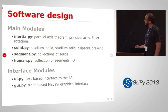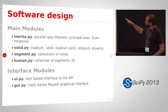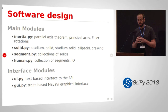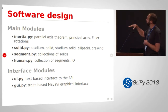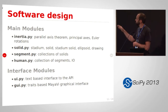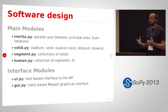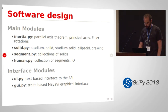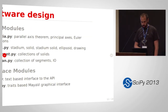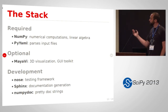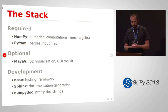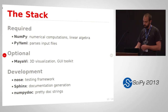We have a Python package that implements this model. We have an inertia module that deals with basic inertia things like the parallel axis theorem. Then we have a solid module that deals with the basic stadium shape and all the associated inertial properties for a single stadium. Then we have segments that are made up of multiple solids, and finally the top-level module, human.py, has the meta information for the collection of segments that make up a whole human model. We have two interfaces: a UI and a GUI. It's based on NumPy, and we use PyYAML to parse input files that have all the measurements. Optionally, if you have MayaVI, we can give you a nice 3D GUI toolkit.